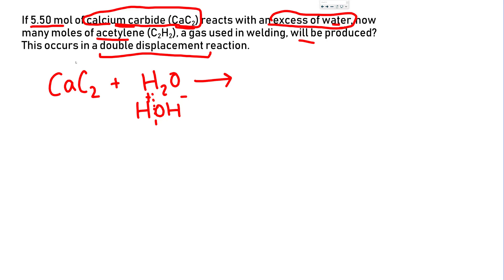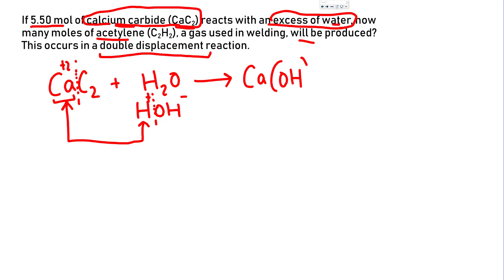Looking at calcium carbide, calcium has a +2 charge. It's going to switch places with the hydrogens because the two positives switch. So calcium is now going to combine with hydroxide. Because hydroxide is −1, you need 2 hydroxides to combine with 1 Ca²⁺. What you're left with is C₂ combining with hydrogen. Your acetylene gas, C₂H₂, is going to be the product.